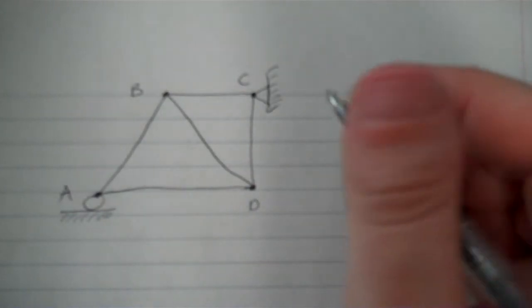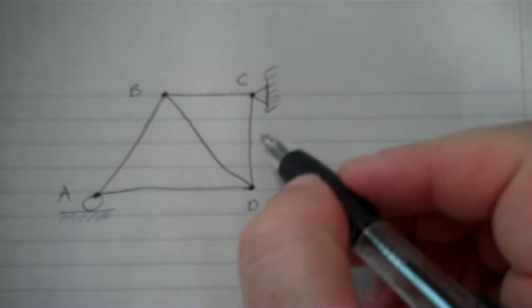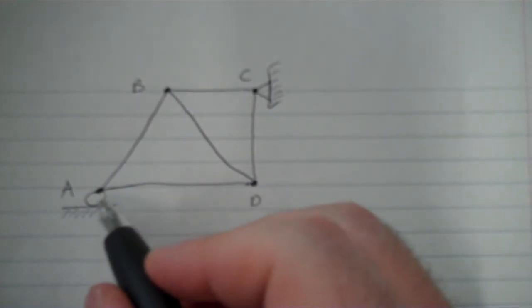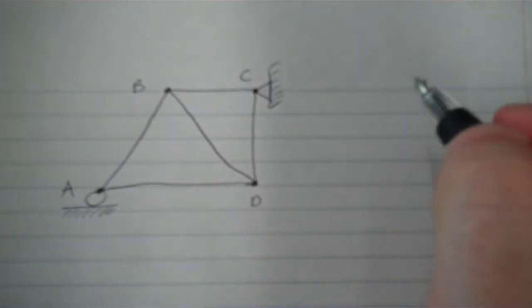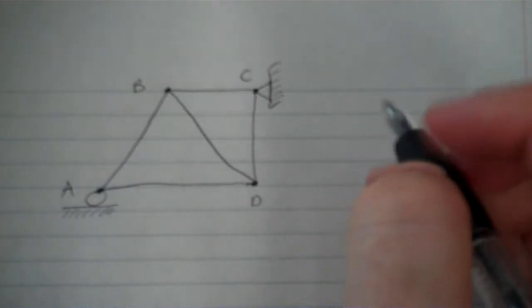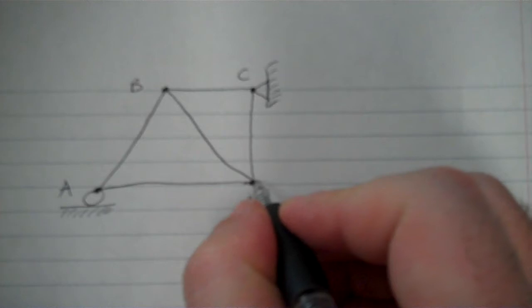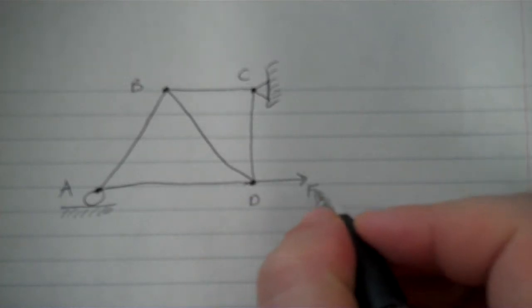Alright, so let's tackle this truss. I have a pin at joint C, I have a roller at joint A. So first I'm going to start off with a free body diagram of what's going on here. Now I have a few more things. I have an applied force here, I'm going to call that force D.